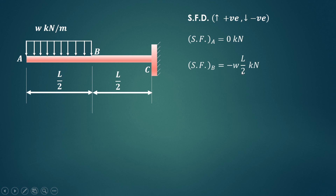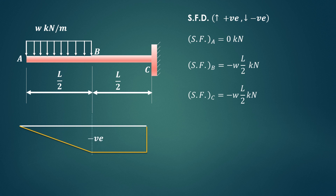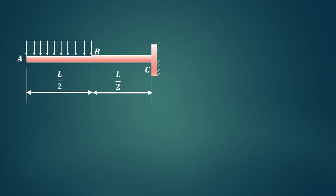Shear force at C will be the same because there is no other load acting between B and C, so shear force at C is also equal to minus WL by 2 kN. Drawing the shear force diagram: at point A it is 0, at point B it is minus WL by 2, and it remains the same over the remaining length to C. Since it is below the baseline, this is a negative shear force diagram.